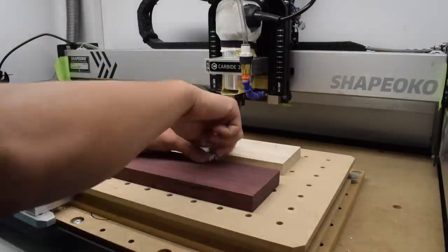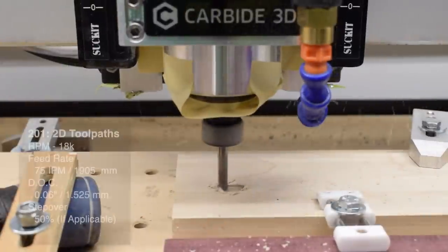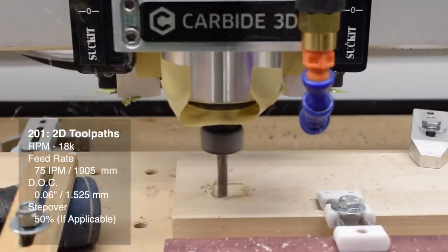For a softer wood like the generic maple you might get at the home center or even walnut, I would do 75 inches per minute at a depth of cut of 0.06 inches.